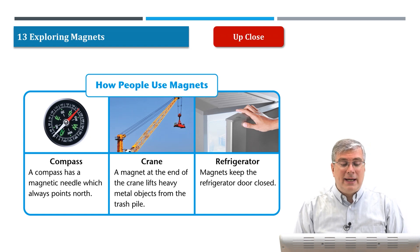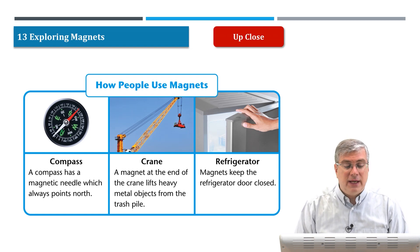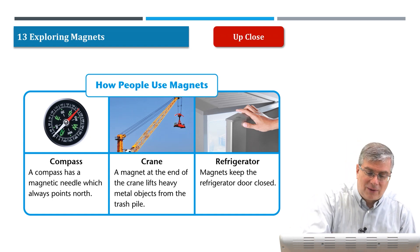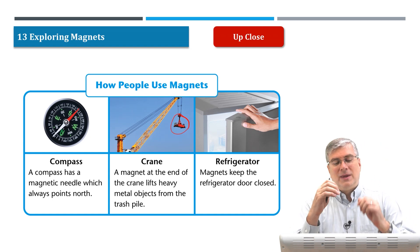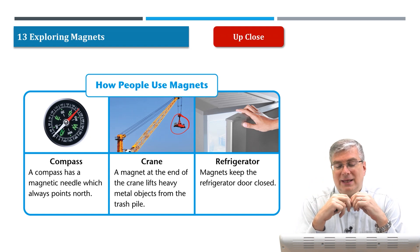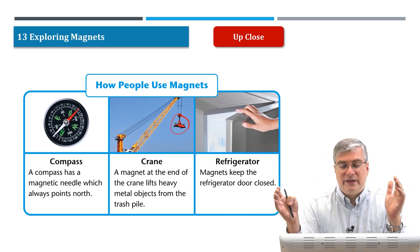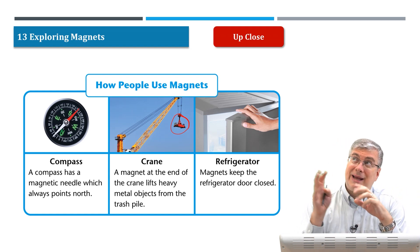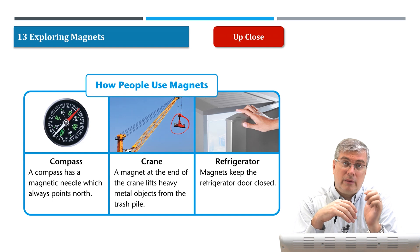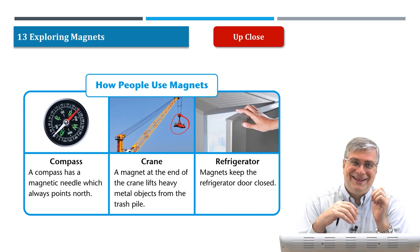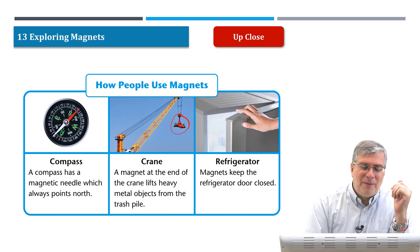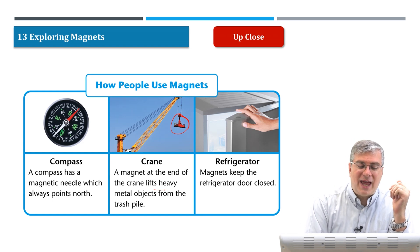Next, we have a magnetic crane. A magnet at the end of the crane — this is a very powerful magnet. Even though it's very powerful, it's not going to operate over long distances. So if you're wearing a watch, don't worry about a magnetic crane — your arm's not going to fly up and hit the crane. It has to be pretty close. A magnet at the end of the crane lifts heavy metal objects from the trash pile.